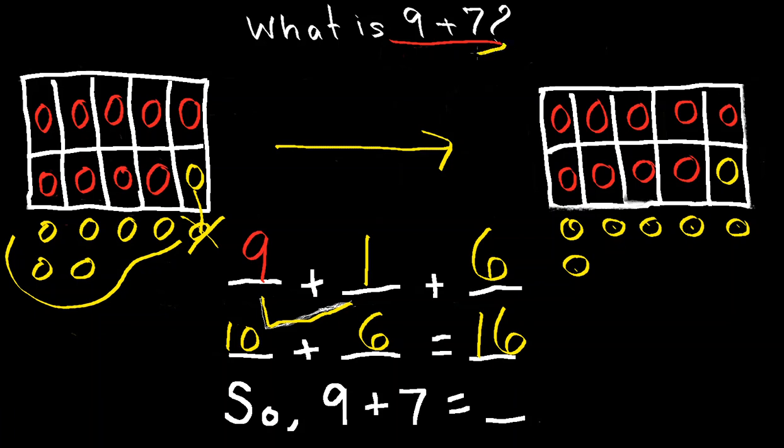So let's go back to our original question. What is 9 plus 7? So 9 plus 7 is also 16. And that is how you use make a 10 to add.